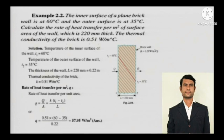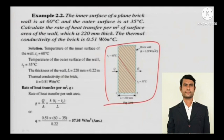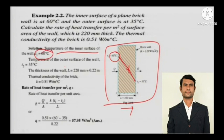So the temperature of the inner surface — as shown in the diagram — is T1 equal to 60 degree Celsius. The temperature of the outer surface of the wall is 35 degree Celsius.